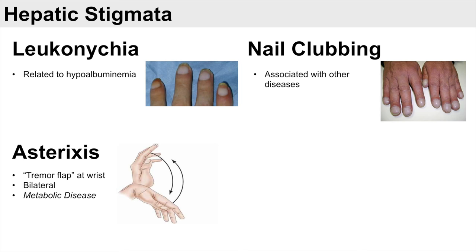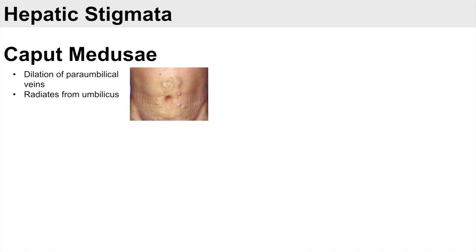Another stigmata of hepatic disease is caput medusae, which is an engorgement or dilation of veins near the umbilicus. Looking at the abdomen, you may see this engorgement of veins radiating from the belly button — specifically a dilation of para-umbilical veins. Caput medusae is a result of portal hypertension causing a backup of blood into these veins, leading to their engorgement.